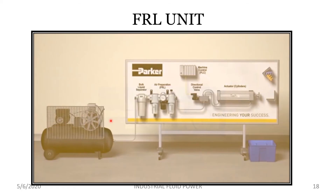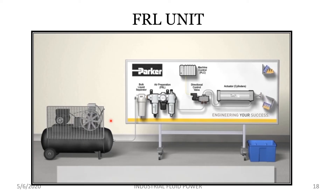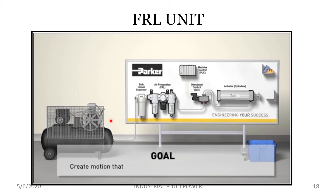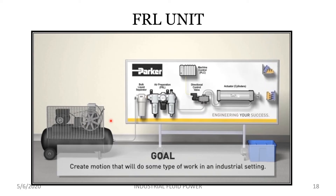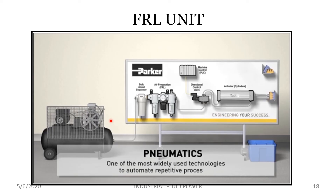Now let's see how this FRL unit works in industry. This video describes how industrial pneumatic systems work. These five types of components represent the most common elements used in these systems. The ultimate goal of this entire collection of components in most cases is to create motion to do some type of work. In an industrial setting, pneumatics is one of the most widely used technologies to automate repetitive processes.